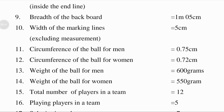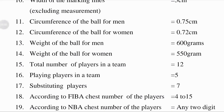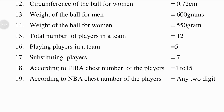Width of the marking lines, excluding measurement: width means the breadth of the boundaries running from the through line to the baseline; that is equal to 5 centimeters. Circumference of the ball for men: circumference means the distance around the ball; for adult males that is 0.75 meters. Circumference of the ball for women: the distance around the ball for females is 0.72 meters. Weight of the ball for men is 600 grams; weight of the ball for women is 550 grams.